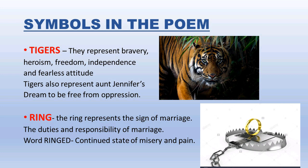The word 'ringed' is also sometimes taken as a symbol because it talks about a continued state of misery and pain. A ring represents a circle — an endless shape with no end. So here, the ring symbolizes that Aunt Jennifer's tyranny, oppression, problems, misery, and pain are like a circle that will not end, even after her death as seen in the last stanza. Together, tiger representing dream and ring representing oppression are the key symbols which are very important in the context of the exam.